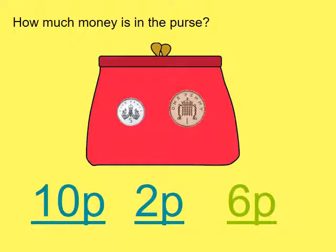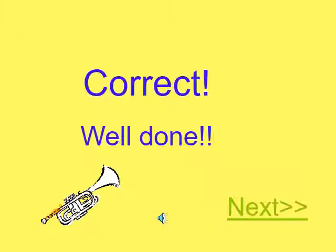Take a look at the purse on the screen. We've got a five pence coin and a one pence coin. Add them together to find the total. So we've got five and one more. How much is that all together? Can you find the amount? Is it ten pence, two pence or six pence? That's correct, six pence.